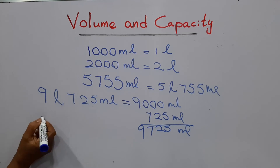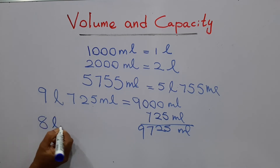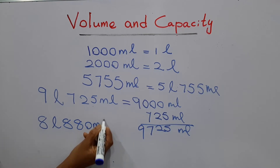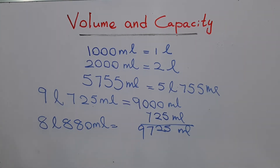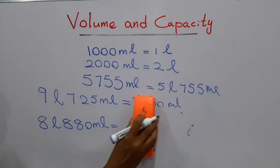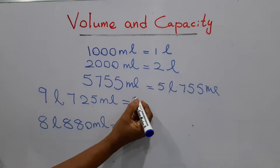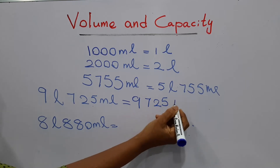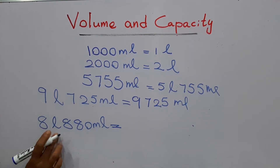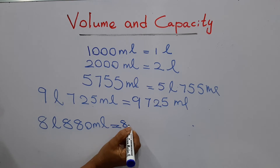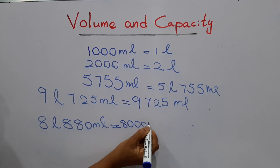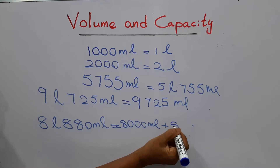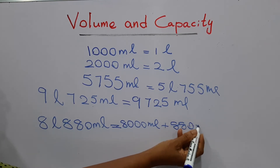We'll move to another one. Eight liters and eight hundred and eighty milliliters. Eight liters means eight thousand milliliters. Add eight thousand plus eight hundred and eighty milliliters, giving eight thousand eight hundred and eighty milliliters.